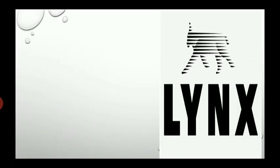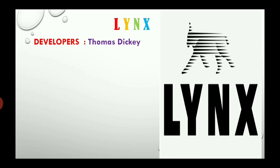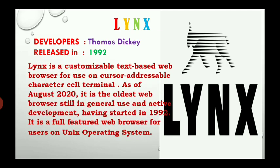One of the oldest web browsers was Links. The developer of Links is Thomas Dickie, and it was released in the year 1992. Links is a customizable text-based web browser for use on cursor-addressable character cell terminals. As of August 2020, it is the oldest web browser still in general use and active development, having started in 1992. It is a full-featured web browser for users on Unix operating systems.